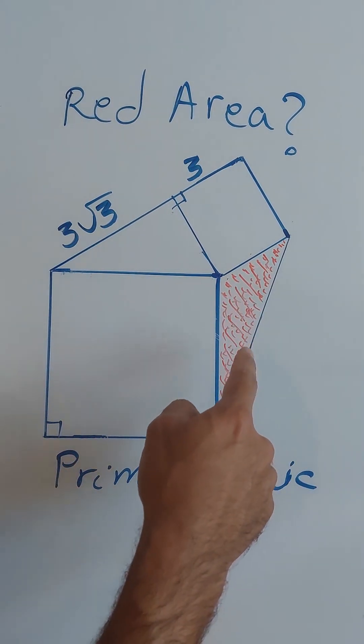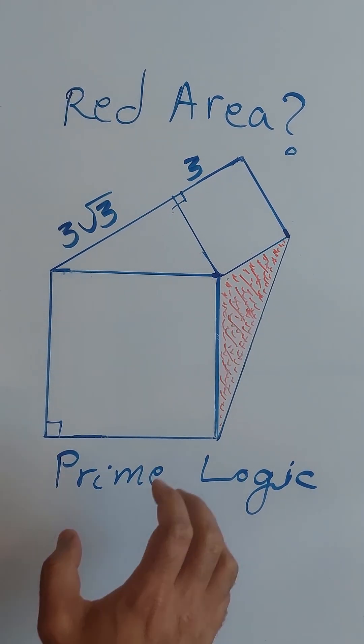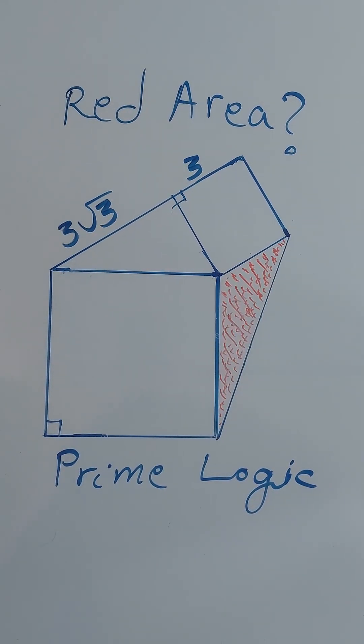What is this, what is the area of this red shaded region? So we have two squares here. These are the assumptions of this problem.